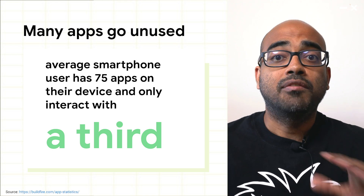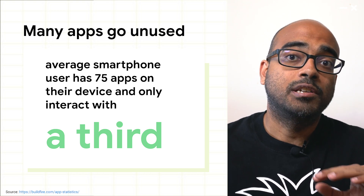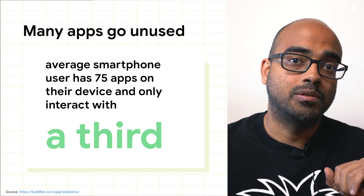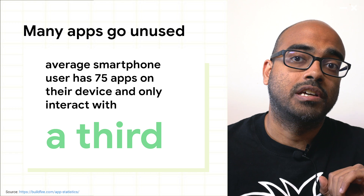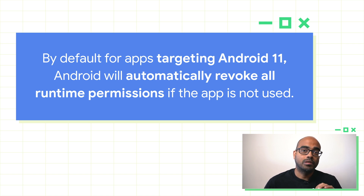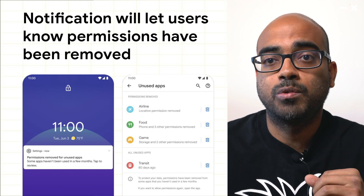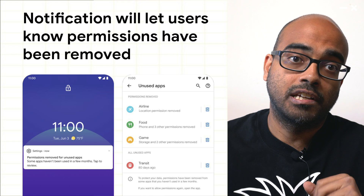Time for the next useful statistic, and this one is about app usage. The average smartphone user has about 75 apps on their device but regularly interacts with only about a third of them. The remaining two-thirds may not be providing much value to the user but are still able to access data from previously granted permissions. By default, for apps targeting Android 11, the system will automatically revoke all runtime permissions if the app has not been used for a certain amount of time. To apps, this has the same effect as a user denying a permission via the settings UI. Users will be informed about these permission revocations via notification and can navigate to the settings UI to take further action, for example by uninstalling an application they no longer intend to use.